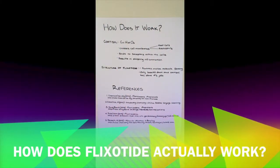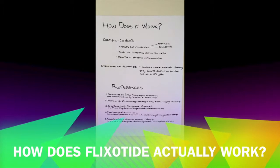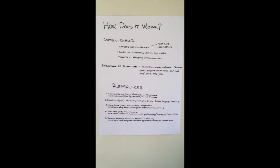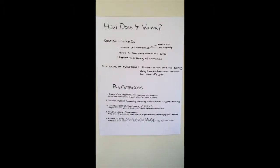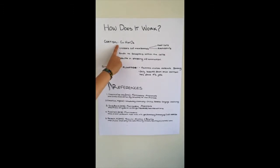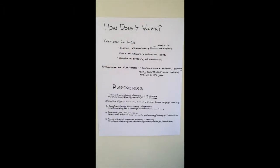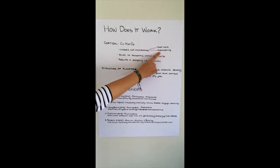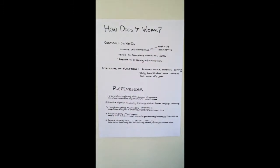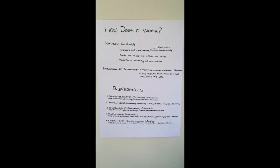So, how does Flixotide actually work? Before I said it was a corticosteroid, meaning that there's cortisol within the Flixotide molecule. And cortisol looks a little something like this. Cortisol works by crossing cell membranes and in my body, it's my mast cells and my eosinophils. Once within the cells, it binds to receptors and this stops inflammation.